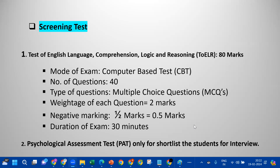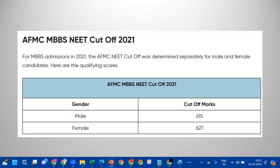Next is the Psychological Assessment Test, only for shortlisted students for the interview. This test is only for eligibility. If you have a shortlist for the interview, you can use the eligibility test. In the screening test, there is a cut-off score. In the next year, there is a difference between male and female students.